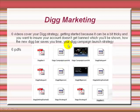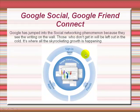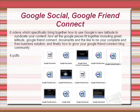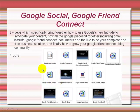There are also six PDFs included. Module number four is Google Social. Google has jumped into the social networking phenomenon because they see the writing on the wall — those who don't get in will be left out. It's where all the skyrocketing growth is happening online. These eight videos specifically bring together how to use Google's new Latitude to syndicate your content, how all the Google pieces fit together including Gmail, Latitude, Google Friend Connect, and documents — which can be your complete and free business solution. And finally, how to grow your Google Friend Connect blog community the right way and keep your readers engaged. There are also four PDFs included.